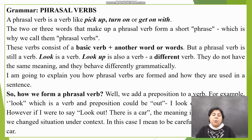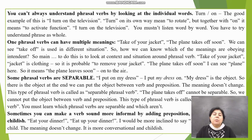How do we form a phrasal verb? We add a preposition to a verb. For example, 'look' is a verb and the preposition could be 'out' — 'I look out of the window.' However, if I were to say 'Look out, there is a car,' the meaning is changed because we changed the situation and the context. In this case, it means to be careful because there is a car. You cannot always understand phrasal verbs by looking at the individual words.